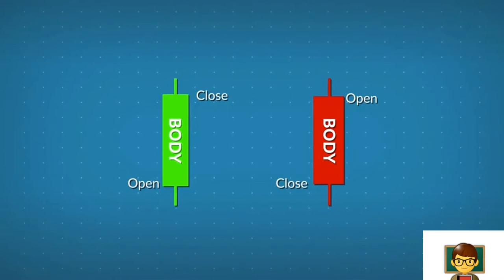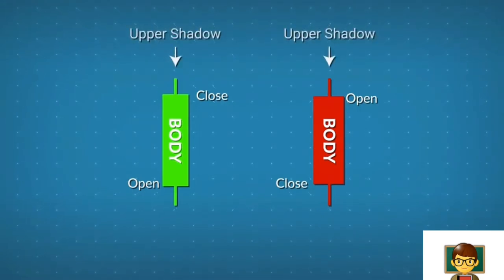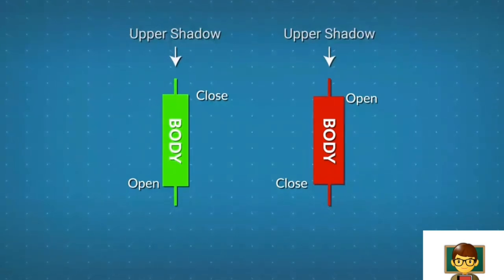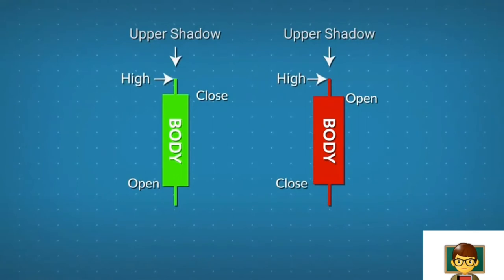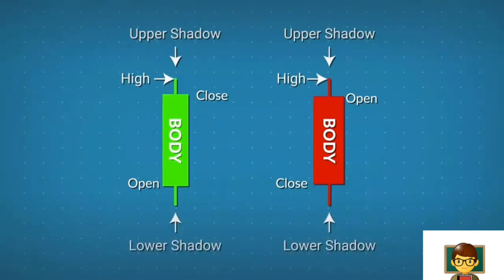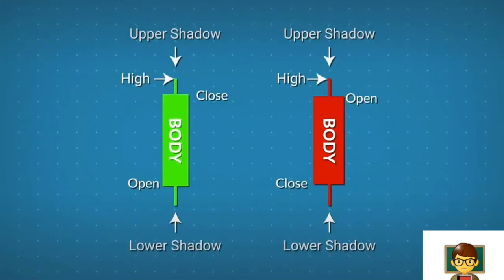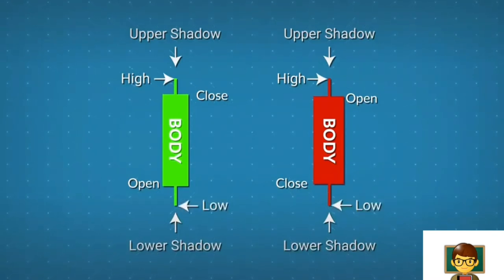The shadow above the real body is called the upper shadow. The peak of the upper shadow is the highest level the price had reached during that session. The shadow under the real body is known as the lower shadow. The bottom of the lower shadow is the lowest price of the session.